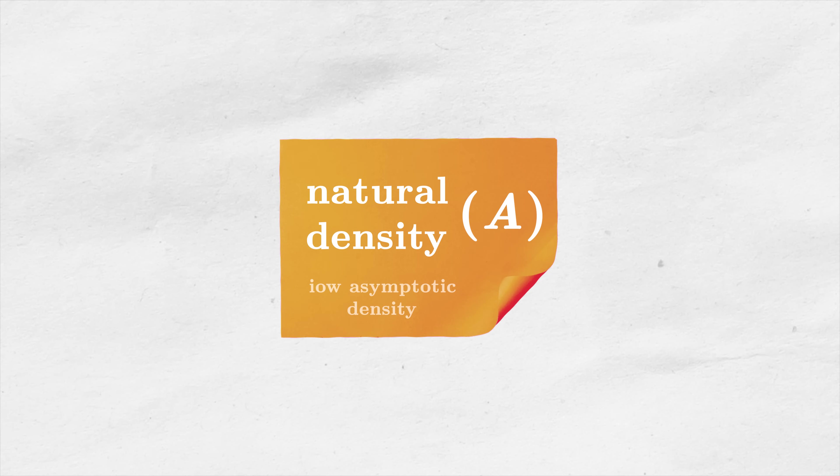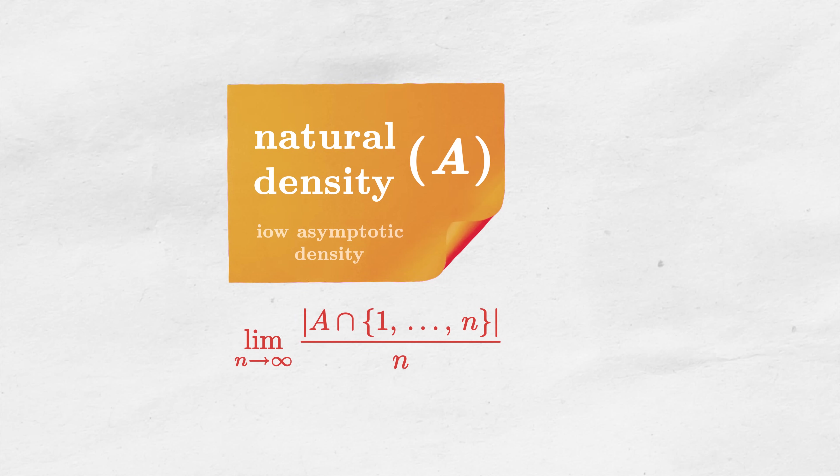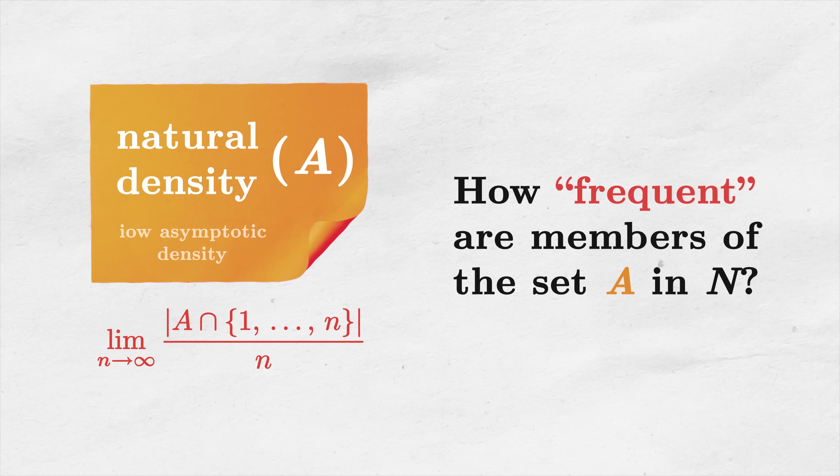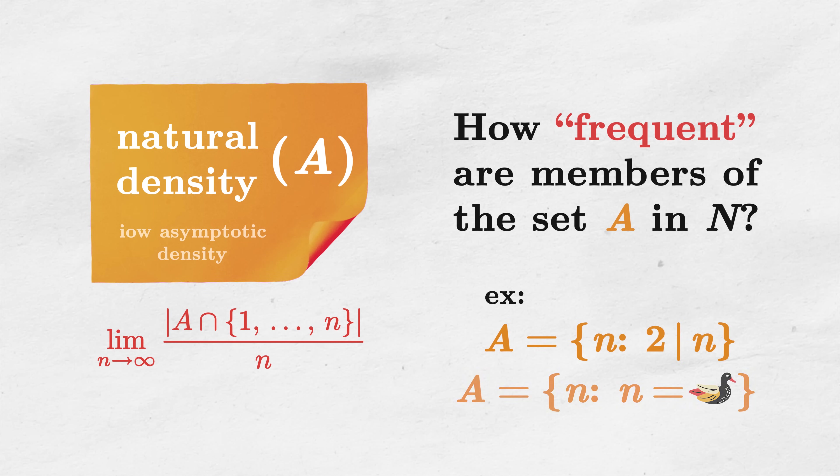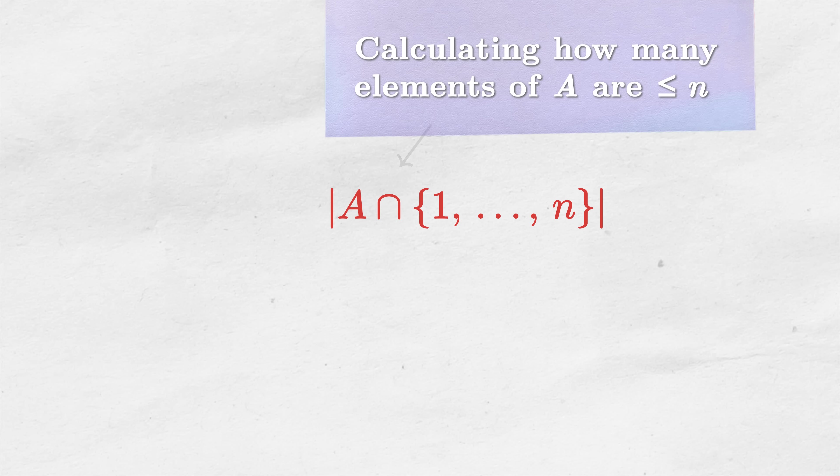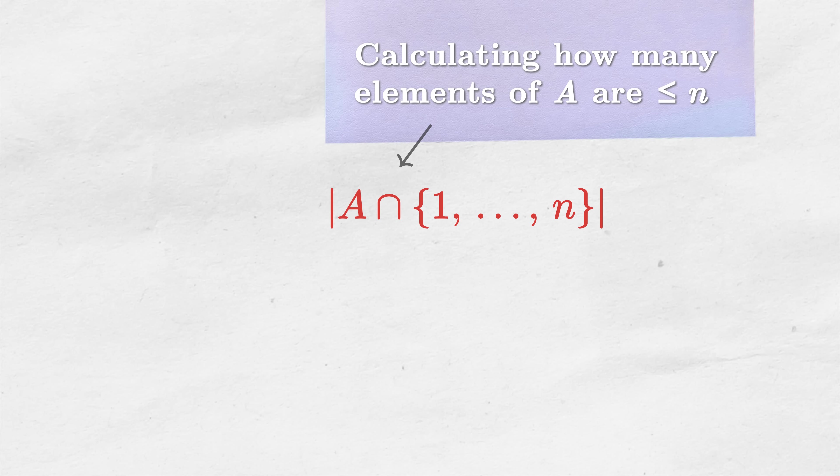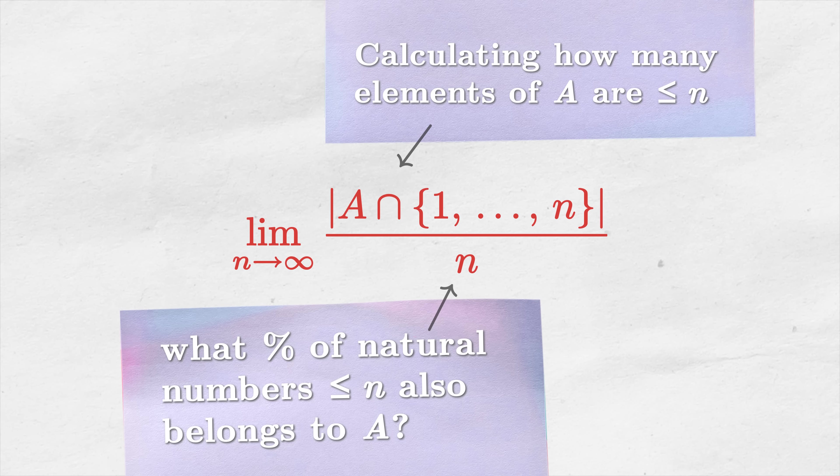In number theory we are often interested in how common or rare a certain class of numbers is. For example, we intuitively know that only half of natural numbers is even and the other half is odd. But cardinalities don't work here as an explanation because we know that there are infinitely many even numbers and there are infinitely many natural numbers in general. So how can we prove it in a formal mathematical manner? This is where natural or asymptotic density comes in handy. It's a simple limit that can be used to explain what fraction of the set of all natural numbers satisfies a certain condition, for example being even or being a duck number. We simply calculate how many numbers below level n satisfy the given condition, take a limit when n goes to infinity and there we have it.